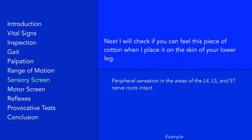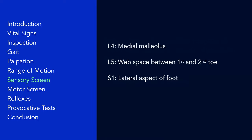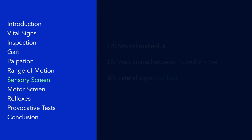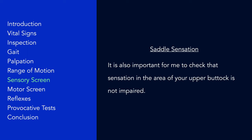For the sensory screen, dab the patient's skin with a piece of cotton wool to detect any loss of sensation. Assess three dermatomes, starting distally and moving proximally. The lateral aspect of the foot corresponds to S1, the web space between the first and second toe corresponds to L5, and the medial malleolus corresponds to L4. Saddle anesthesia, as well as bowel and bladder incontinence, are important signs of cauda equina syndrome, which is a surgical emergency. To assess for perineal sensation, which is supplied by the sacral roots S2 to S4, lightly stroke between the upper buttocks with a blunt object.